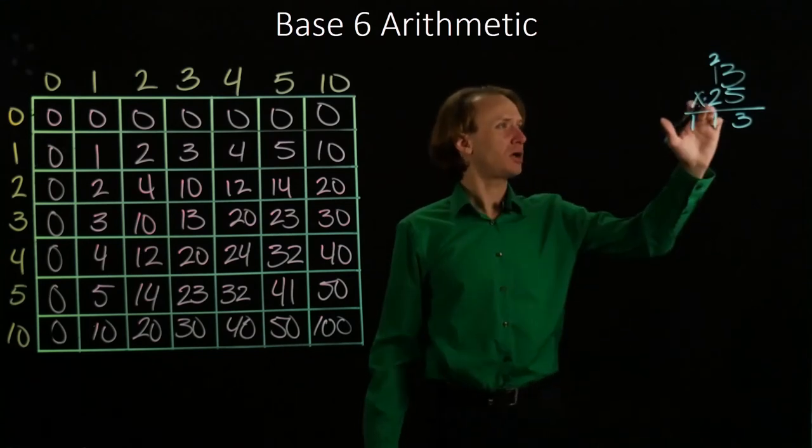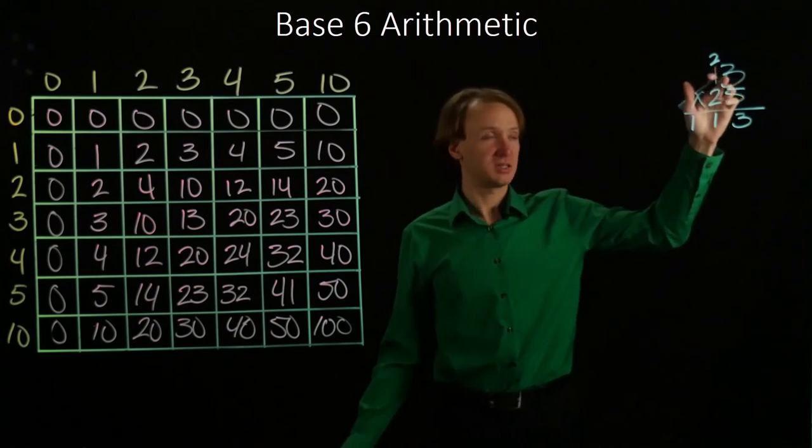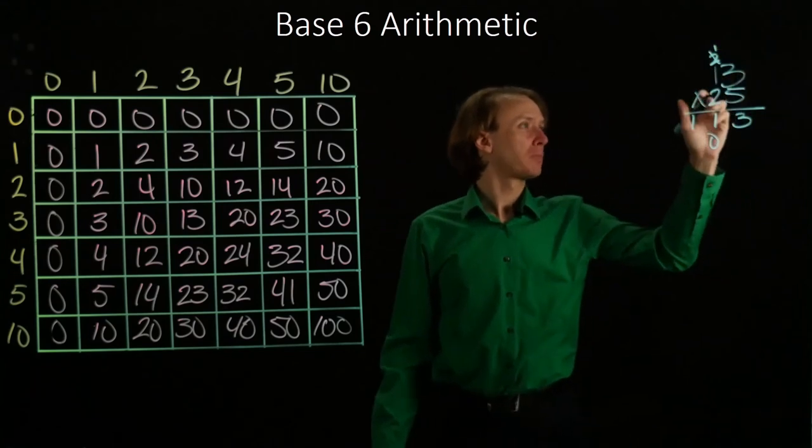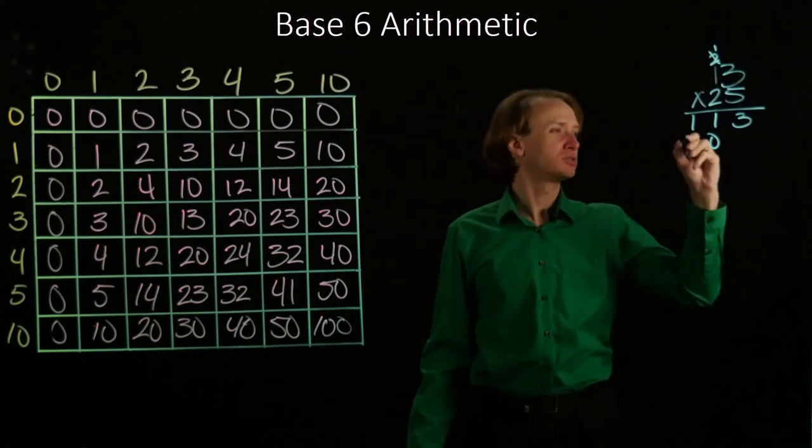Now I have the 2 times 13, which will give me 2 times 3 is 10. Then 2 times 1 is 2, plus 1 is 3.